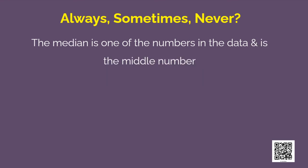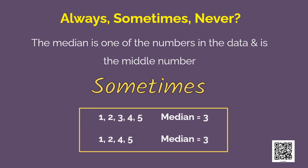The median is one of the numbers in the data and is the middle number. Sometimes yes and sometimes no. We will look at some examples. In the first group of data, you can see that median is one of the numbers in the data and also the middle number. Whereas, in the second group, the median is the average of the two middle numbers. That is, the average of 2 and 4. And here, it is not the middle number.